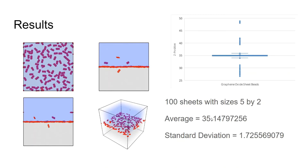The average z position is still very close to 35, but in this case the standard deviation is greater since there are some outliers. Those outliers indicate that some of the sheets do not always stick at the interface, but sometimes actually leave the interface and dissolve within the solutions.